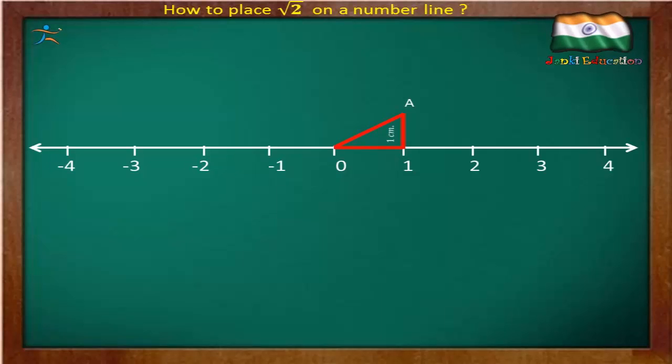Now we need to place √2 on a number line. So for that take a radius of OA with the help of a geometrical compass and mark an arc which intersects the number line. This intersection point is your √2.